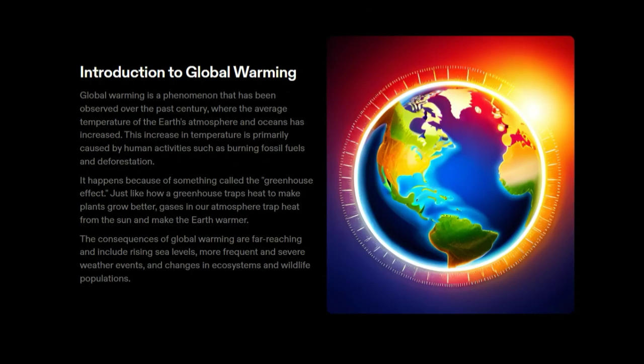Introduction to global warming: Global warming is a phenomenon observed over the past century where the average temperature of the earth's atmosphere and oceans has increased. This increase is primarily caused by human activities such as burning fossil fuels and deforestation. It happens because of the greenhouse effect — just like a greenhouse traps heat to make plants grow better, gases in our atmosphere trap heat from the sun and make the earth warmer. The consequences include rising sea levels, more frequent and severe weather events, and changes in ecosystems and wildlife populations.